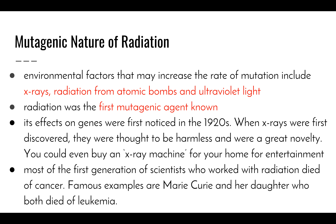Most of the first generation of scientists who worked with radiation died at a fairly young age from cancer. One of the most famous examples was Marie Curie and her daughter, who both died from leukemia through their work with radiation. We also know that Rosalind Franklin suffered from the effects of radiation poisoning due to her work with x-rays, creating x-ray crystallography images of DNA that were then used by Watson and Crick to create their model of the DNA double helix.